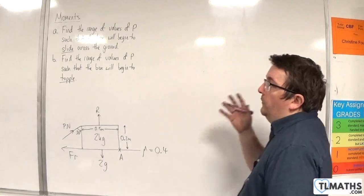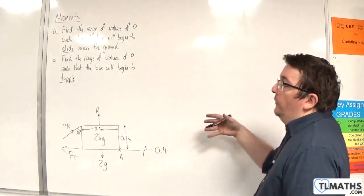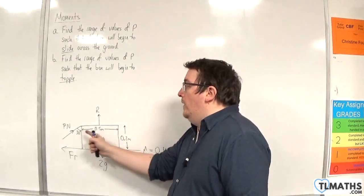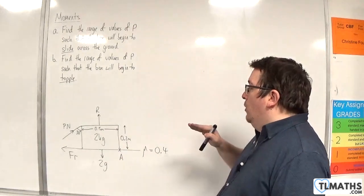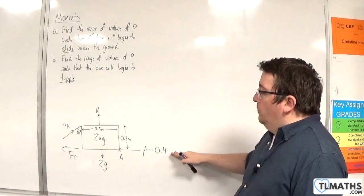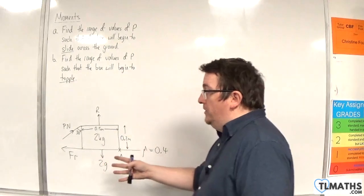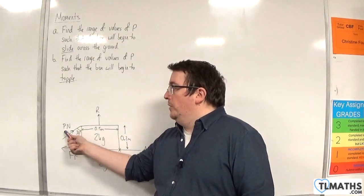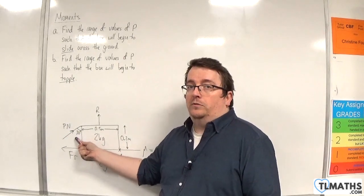In this video we're going to look at the same situation as in the previous video. The same block: 2 kilos, width of 0.5 metres, height of 0.2 metres. We've got rough ground where the coefficient of friction is 0.4. The only thing that's different is that the force being applied to the corner is now at an angle of 30 degrees to the vertical.